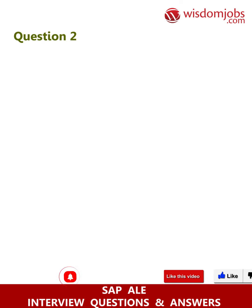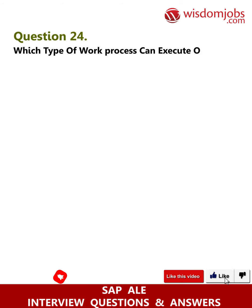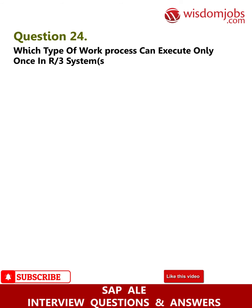Question 24: Which type of work process can execute only once in the R3 system? Answer: Dialogue work processor.